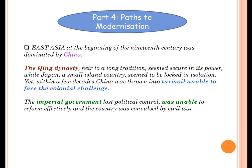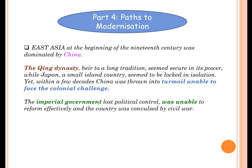The imperial government in China lost political control. It was unable to reform effectively. It was convulsed by civil war and affected by internal disruptions. Internal problems were there because the government was not able to stand against imperialism.